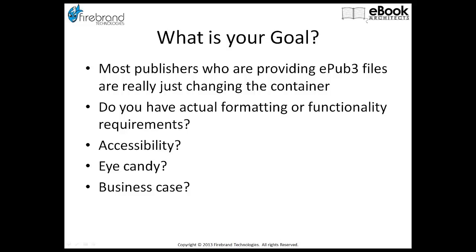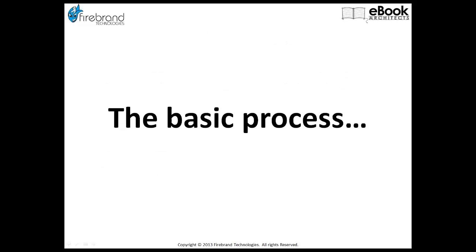Let's talk about the basic process. I'm going to talk about the basics first — things you can do right now to create an EPUB 3 file from your EPUB 2. My assumption is that you have an EPUB 2 file and you've already done the development work on it, and that your EPUB 2 file validates against EPUBCheck so you know it's a valid EPUB 2 file. These basic steps are about converting that EPUB 2 into an EPUB 3, and they're basically the container changes that many publishers make.